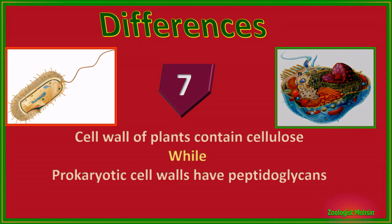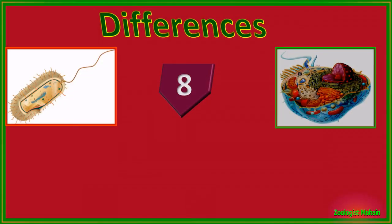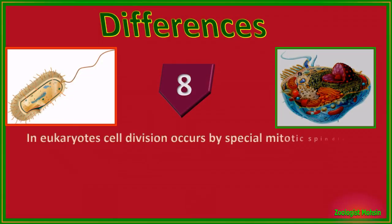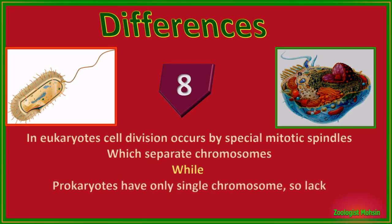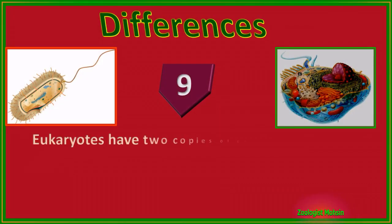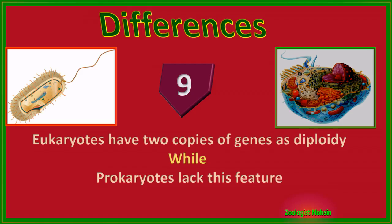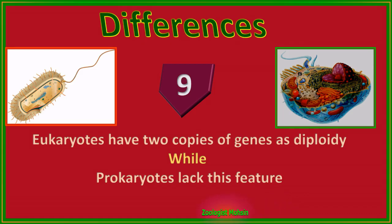Number six: eukaryotes have the ability to phagocytose materials, while prokaryotes lack this ability due to a hard cell wall. Number seven: plant cell walls contain cellulose, while prokaryotic cell walls have peptidoglycans. Number eight: in eukaryotes, cell division occurs by special mitotic spindles which separate chromosomes, while prokaryotes have only a single chromosome and lack such apparatus.